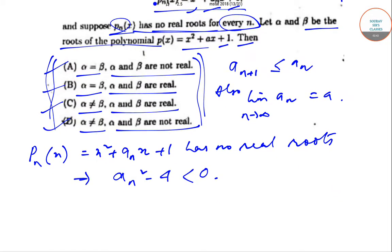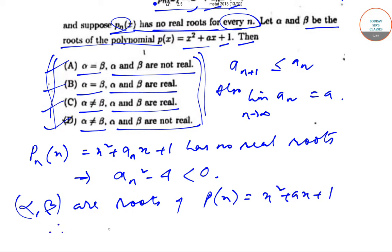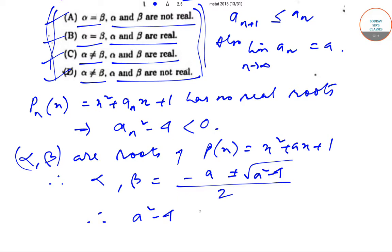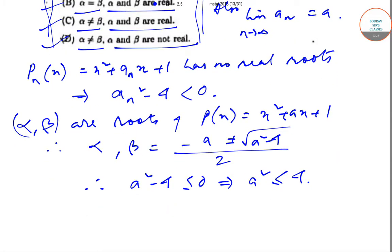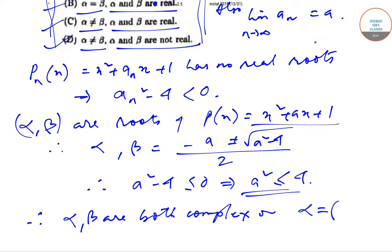Since alpha and beta are roots of p(x) = x² + a·x + 1, we have alpha, beta = (−a ± √(a² − 4)) / 2. From the discriminant condition, since a_n² − 4 < 0 for all n, taking the limit as n → ∞, we get a² − 4 ≤ 0, which implies a² ≤ 4. Therefore alpha and beta are either both complex or alpha equals beta.